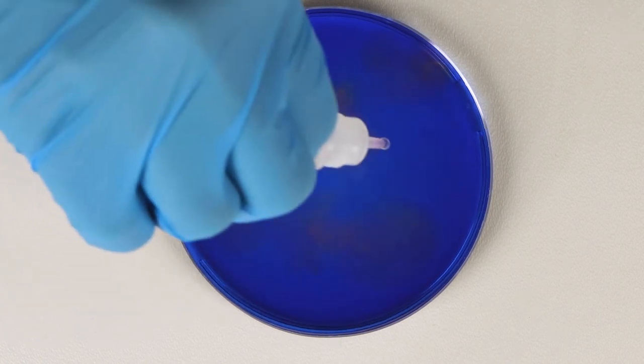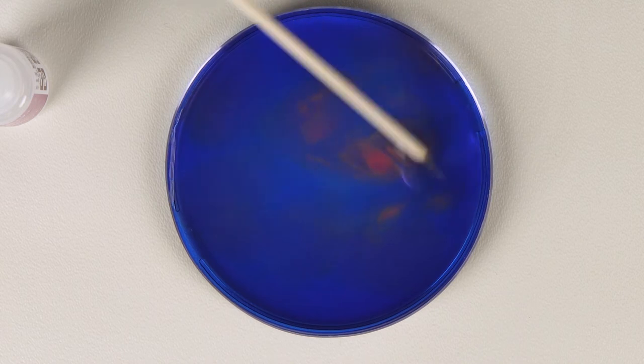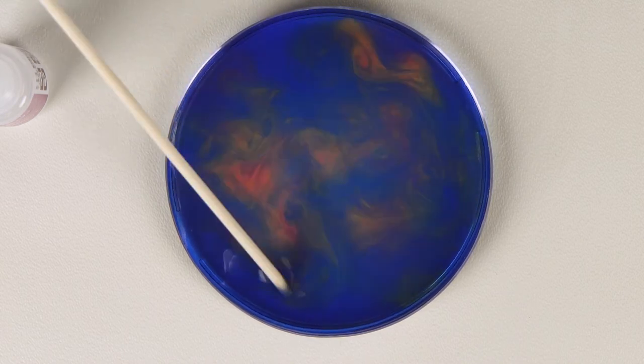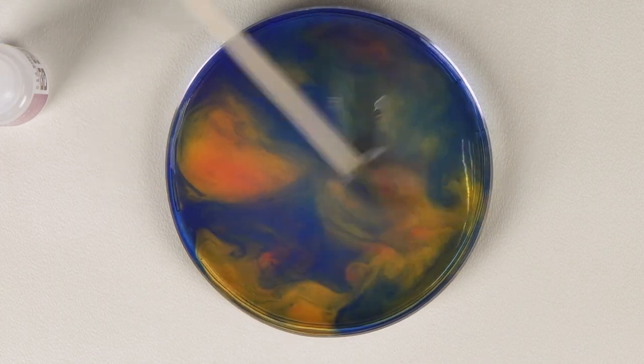You will see orange patterns appearing in the petri dish until the entire solution gradually turns yellow. Sodium hydrogen sulfate is an acidic medium in which thymol blue is naturally red.